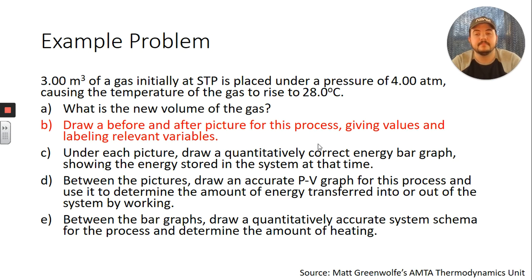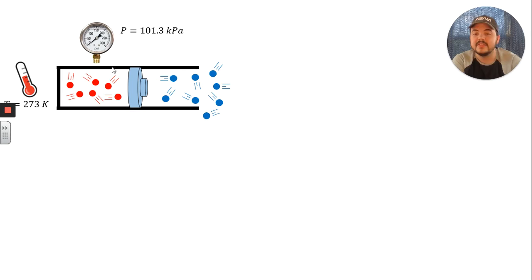So let's keep going. Part b, draw before and after picture of this process, giving the values and labeling the relevant variables. So let's sketch out some pictures. Picture snapshot a: here we go, we've got our cylinder, we've got our piston inside of the cylinder. We have some red gas particles that consist of the gas inside of our system. Outside of the cylinder, we have some gas particles in blue that represent the gas particles outside of our system.